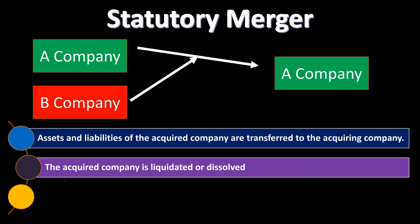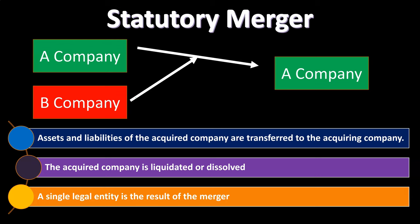The acquired company is liquidated or dissolved. Once the transfer happens, you're left with a shell — the assets and liabilities have been taken out of company B's books and transferred to company A. Now company B has no assets or liabilities anymore. You dissolve company B, and the result is a single entity. Company A has the assets and liabilities of company B and has consumed it — there is no parent-subsidiary relationship.